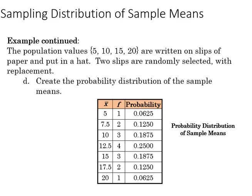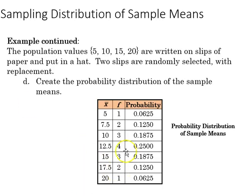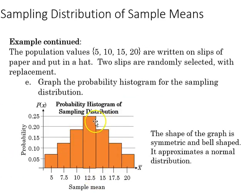Continuing the example, based on the sample means identified previously, we can see the frequency of those sample means appearing from the two slips of paper, and then we see the probability of each of those sample means. If we graph the probability histogram for the sample means, the greatest chance is 12.5, with a probability of 0.25 — the highest of all sample means — and then it has a symmetrical normal distribution as we trail out towards the edges.